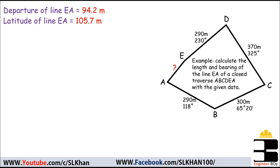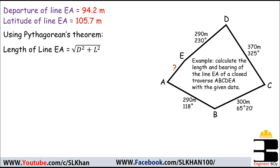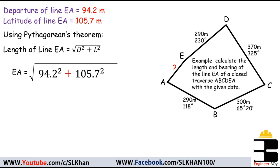Now we can determine the length of line EA using the Pythagorean theorem: length of EA equals the square root of (departure² + latitude²). So length equals √(94.2² + 105.7²), which equals 141.58 meters.